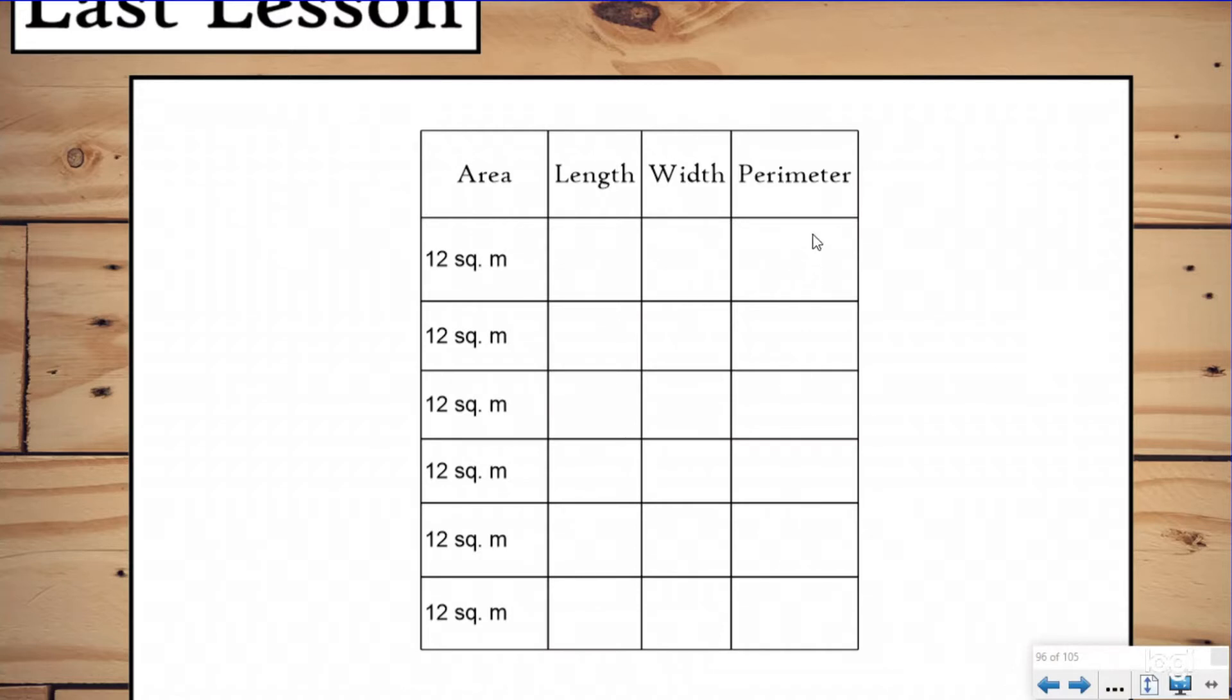And then we found the different perimeters. We discovered that you can have the same area but have completely different perimeters because there's more than one way to make most numbers.